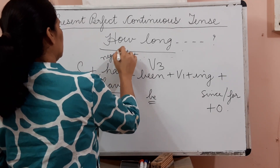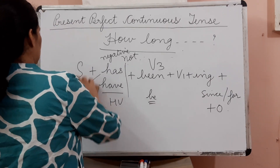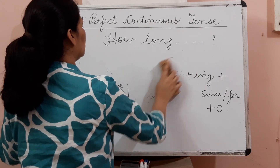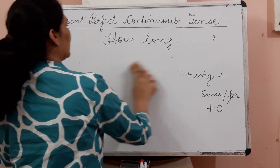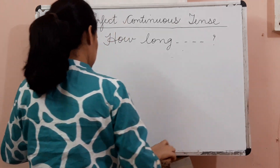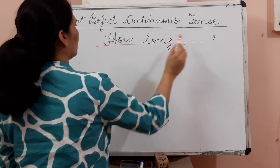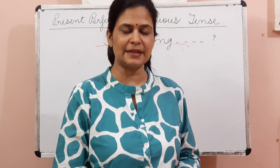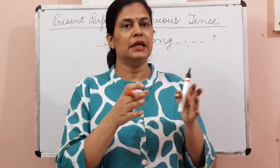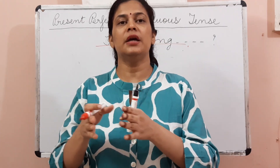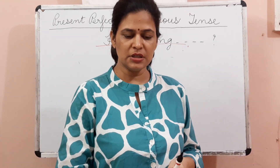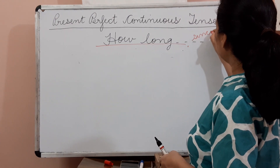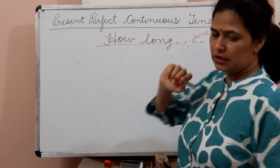Now let us see the different usages. The most important usage is 'how long' — how long the action continued. We use the present perfect continuous for an action which started at some point of time in the past, is continuing right now, and may continue even in the future. This tense is often used with time expressions of how long, using 'since' and 'for' to tell the time.